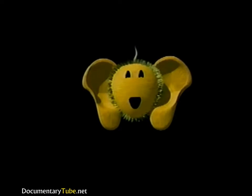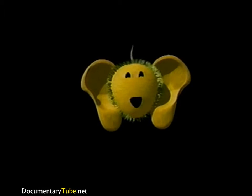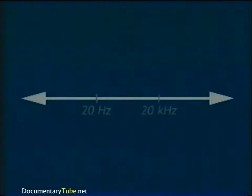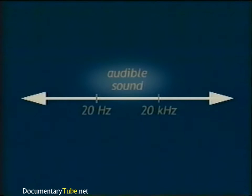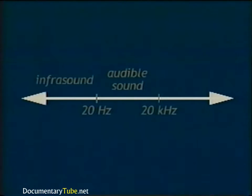Sound waves travel through the air and interact with the human ear. Perfect human hearing lies in the range of approximately 20 to 20,000 hertz. Frequencies below 20 Hz and above 20 kHz are heard by other living creatures but not by humans. The range 20 to 20,000 Hz is called the audible sound range. Infrasound includes frequencies below 20 Hz, and ultrasound includes frequencies above 20 kHz.